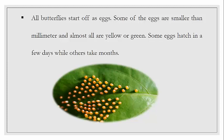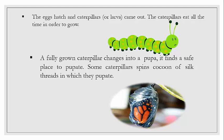After the eggs hatch, caterpillars — also called larvae — come out. The caterpillars eat all the time in order to grow. They are found on leaves and are green in color, as students may have seen. They constantly eat in order to grow bigger and fully develop.